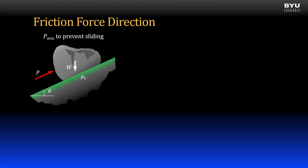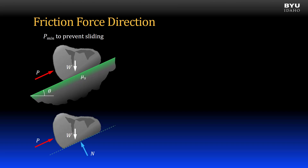Suppose that we have a rock on an inclined plane and we want to find the minimum applied force to prevent sliding. Here is my free body diagram with the applied force, the self-weight, and the normal force shown.